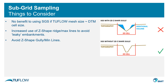Where the DTM is fine enough to pick up gullies, channels, and other low points, subgrid sampling can pick these up and represent them within the hydraulic model, preserving these flow paths without using any gully min lines. In such a case, using a gully min line may misrepresent the width of the flow path, which is better represented by subgrid sampling. Therefore, we would generally recommend avoiding the use of Z-shape gully min lines, although there are still some situations where they may be of use.